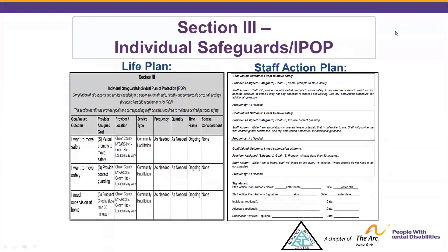Staff have a clear understanding of how to assist this person to move safely, knowing it is on an as-needed basis and that there is an ambulation procedure with additional guidance. It's very important that staff have clear guidance in the Staff Action area and that the frequency is clear. The second example: Goal-Valued Outcome is 'I want to move safely' with a provider assigned goal of 'provide contact guarding,' with provider location, frequency, quantity, timeframe of ongoing, and special considerations — transferred directly into the Staff Action Plan.